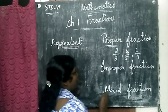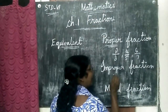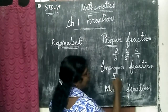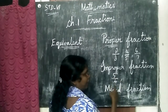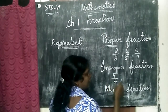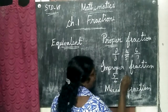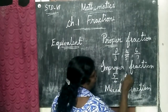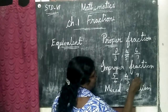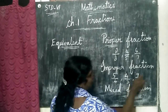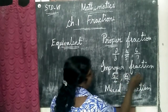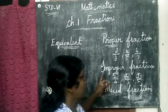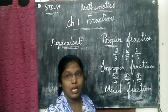In the same way, when the numerator is greater than the denominator — see, five is greater, four is lesser — and four by three, seven by five: these all have numerators greater than their denominator. So it is called improper fraction.